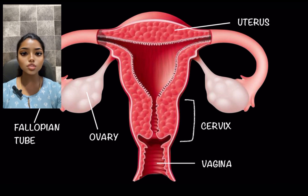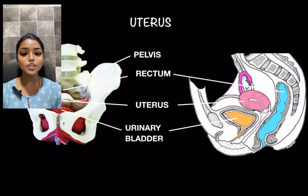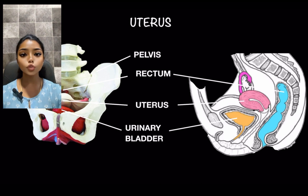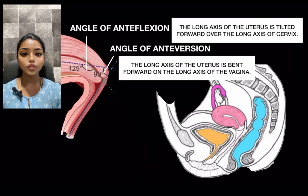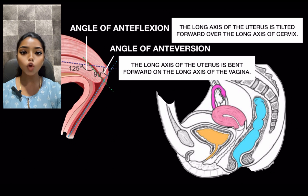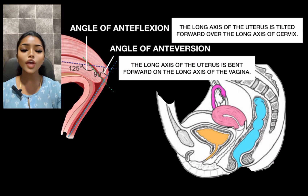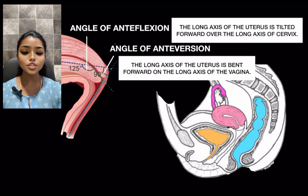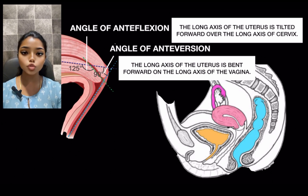The uterus is located in the female pelvis. It is situated in such a way that it has the urinary bladder in front and rectum behind. The normal position of the uterus is anteverted and anteflexion. The angle of anteflexion is that the long axis of the uterus is bent forward over the long axis of the cervix. The angle of anteversion is that the long axis of the uterus is tilted over the long axis of the vagina. This is the normal position of the uterus.